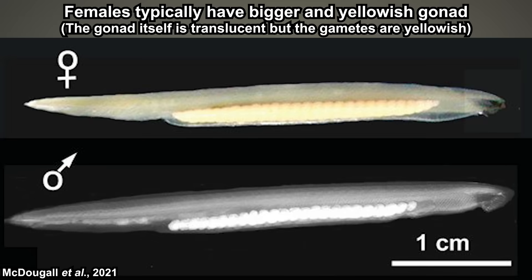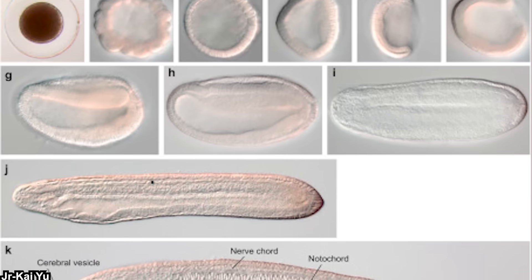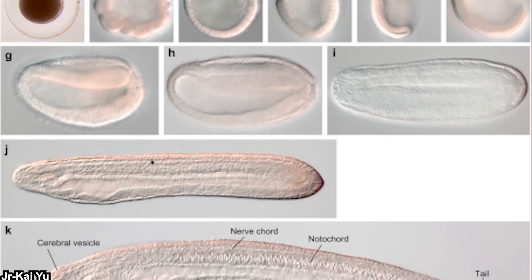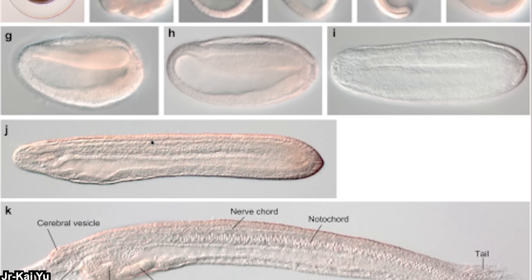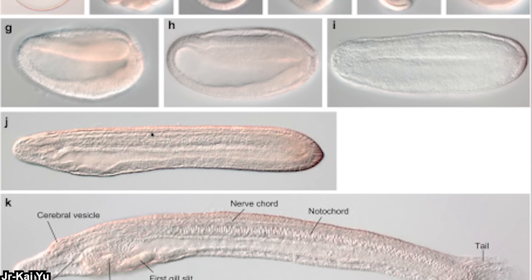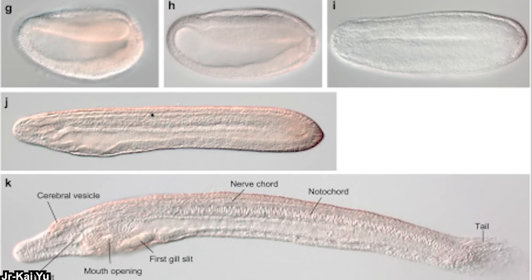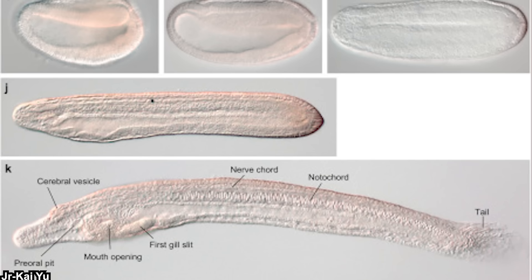Now, what about reproduction? It's quite normal, actually. They are not hermaphrodites and exhibit external fertilization. During spawning season, females release eggs into the water and males release sperm. Fertilized eggs develop into larvae — and what might be interesting is that these larvae are asymmetrical. The mouth and anus are only on the left side, the pharyngeal slits are only on the right side, and the nerve system and gonads are only on the right side. After metamorphosing into adults, they become symmetrical.